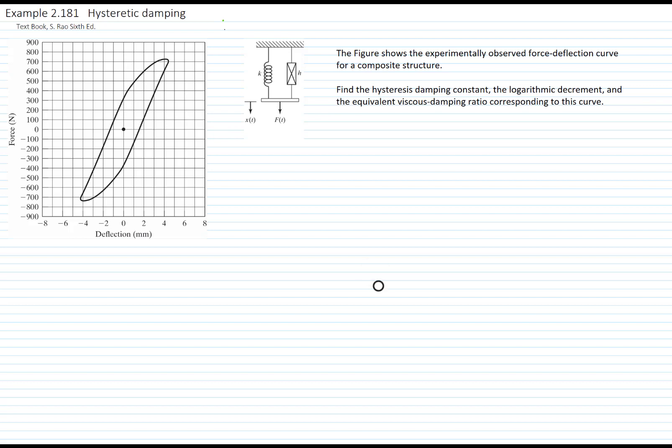This problem is example number 2.181 from our textbook, Rao. The figure shows the experimentally observed force-deflection curve of a composite structure, and we'd like to find the hysteretic damping constant, the logarithmic decrement, and the equivalent viscous damping ratio corresponding to this curve.